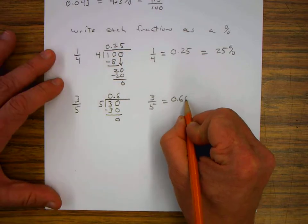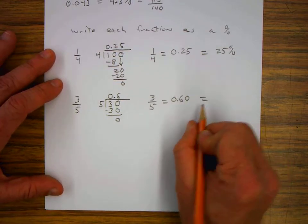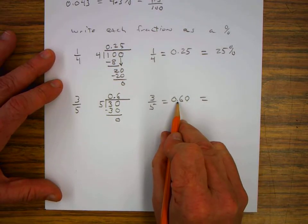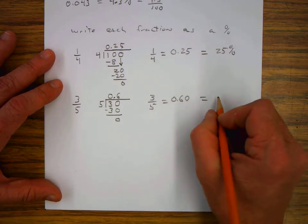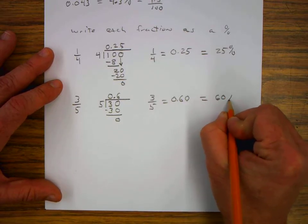So I know that 3 fifths is equal to 0.6, and I can add a 0. Which I know is, if I move the decimal two places, one, two, that's tenths, hundredths. That's 60 percent.